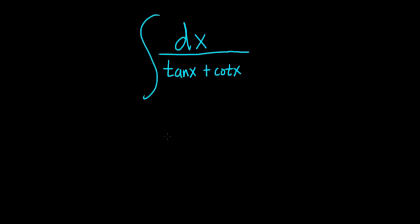Integrate dx over tan x plus cotangent x. Let's try to work it out. So it doesn't appear that there is an obvious u substitution and we have tangent and cotangent. So one way to approach this perhaps is to write everything in terms of sine and cosine.